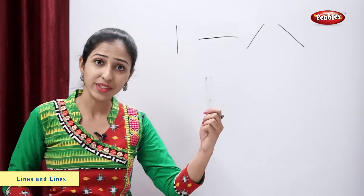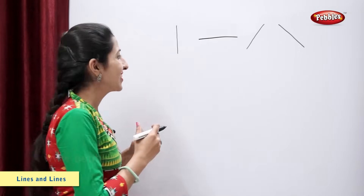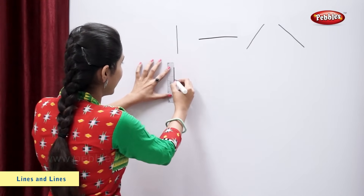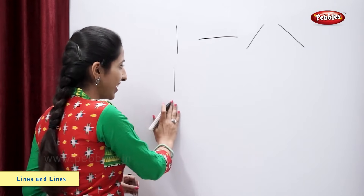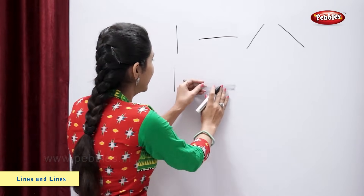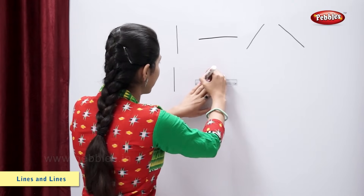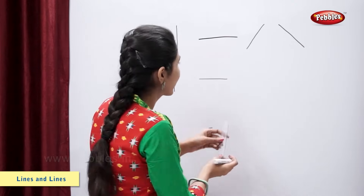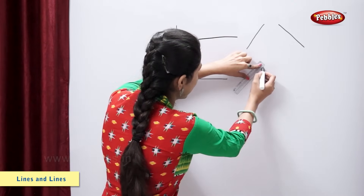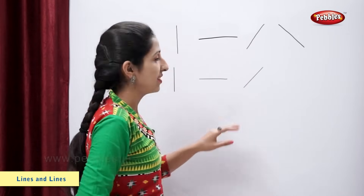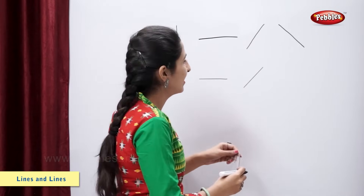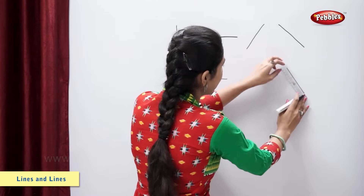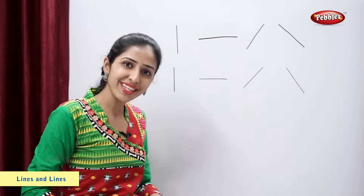Now let's draw some lines using this ruler. One more slanting line. One more slanting line. One more slanting line.